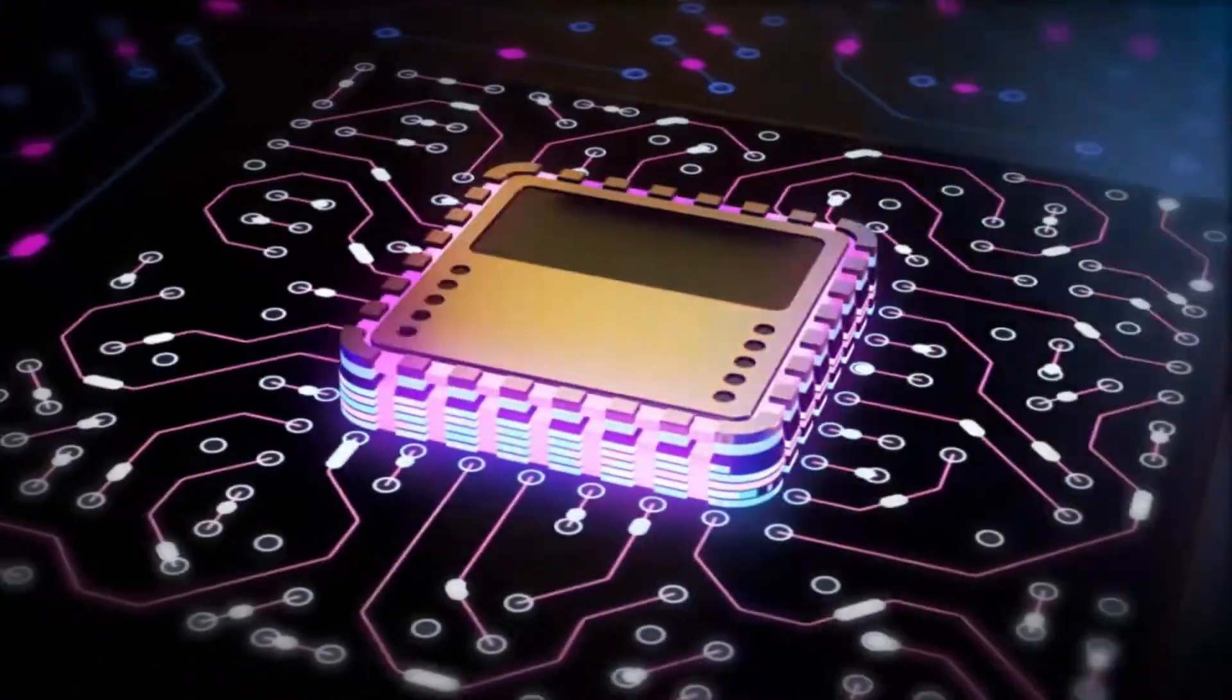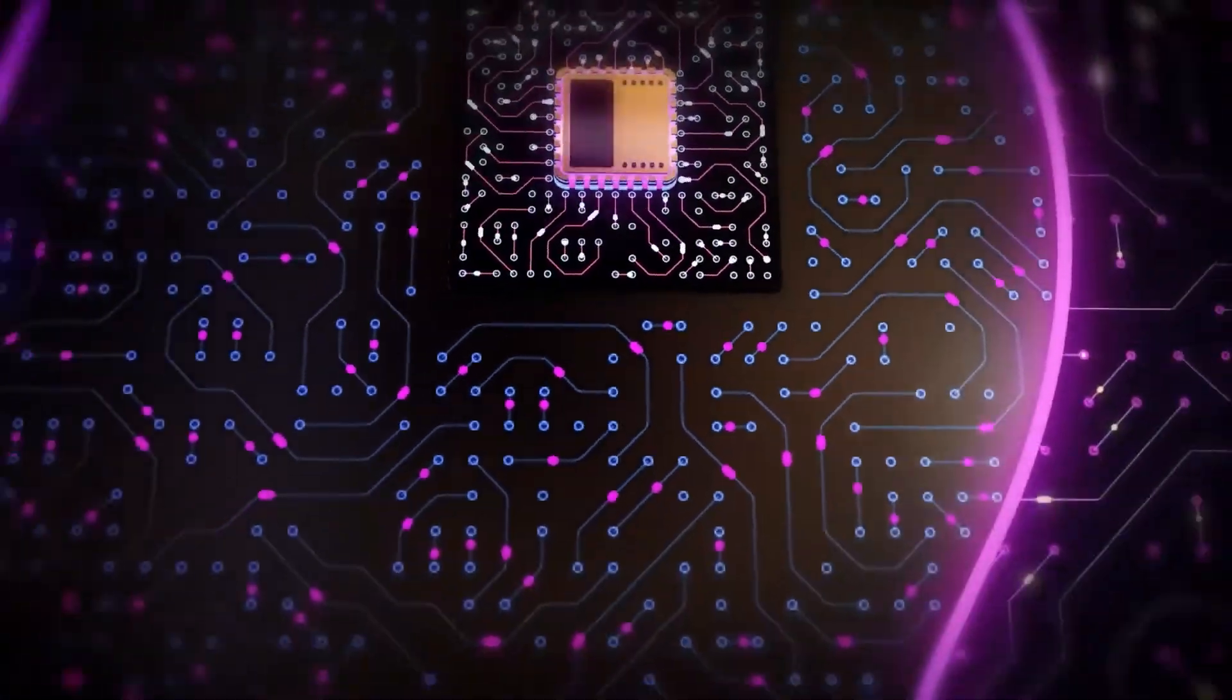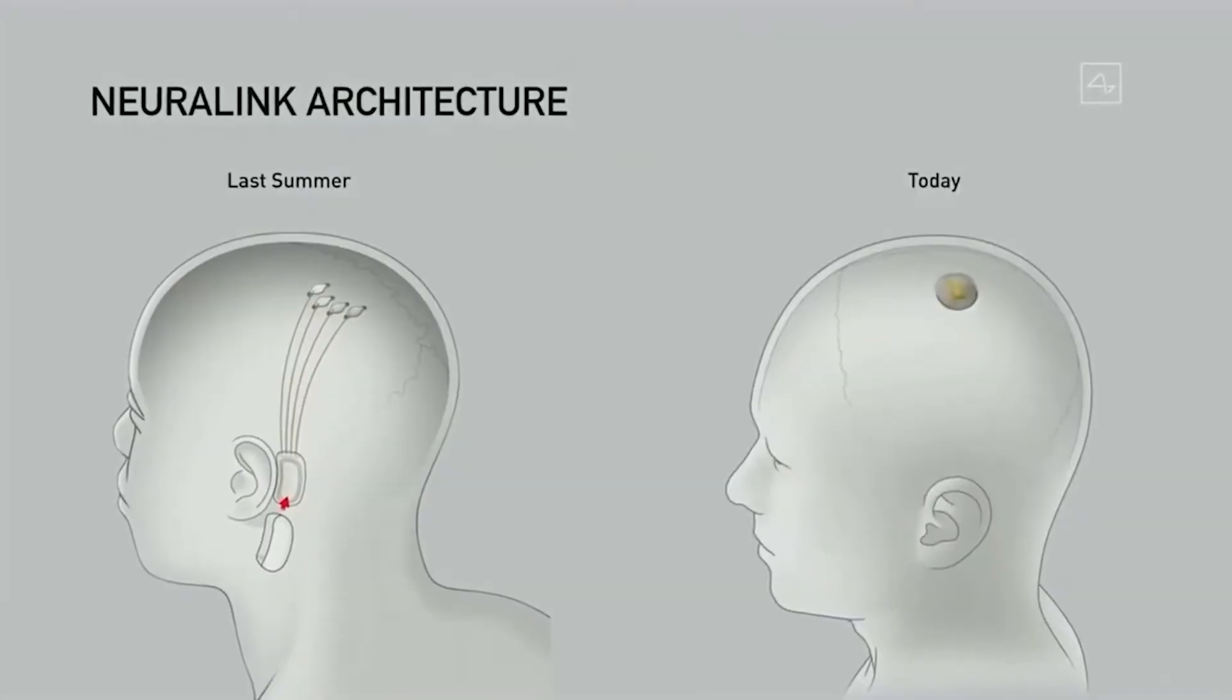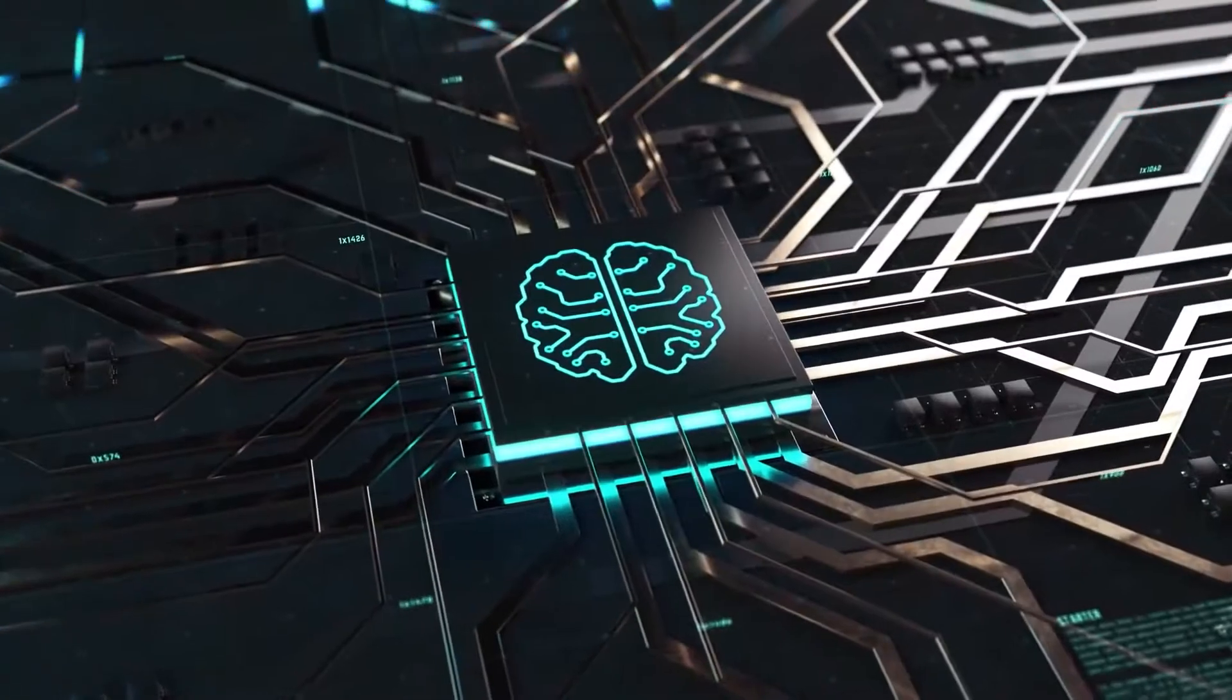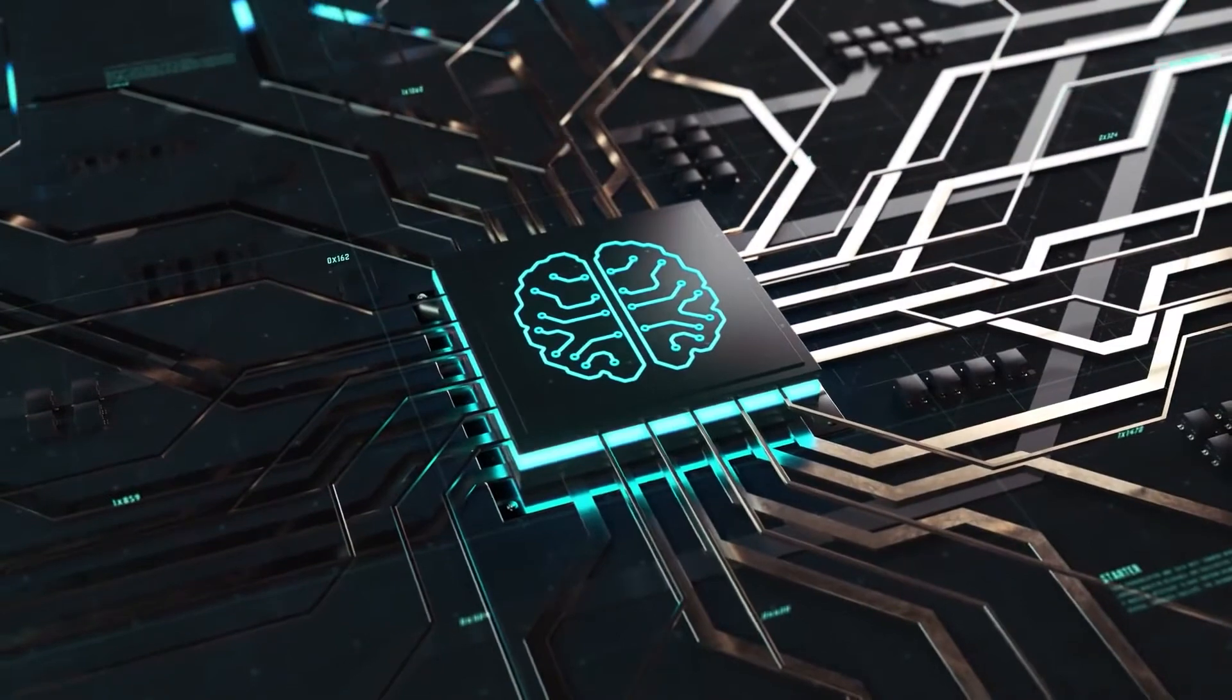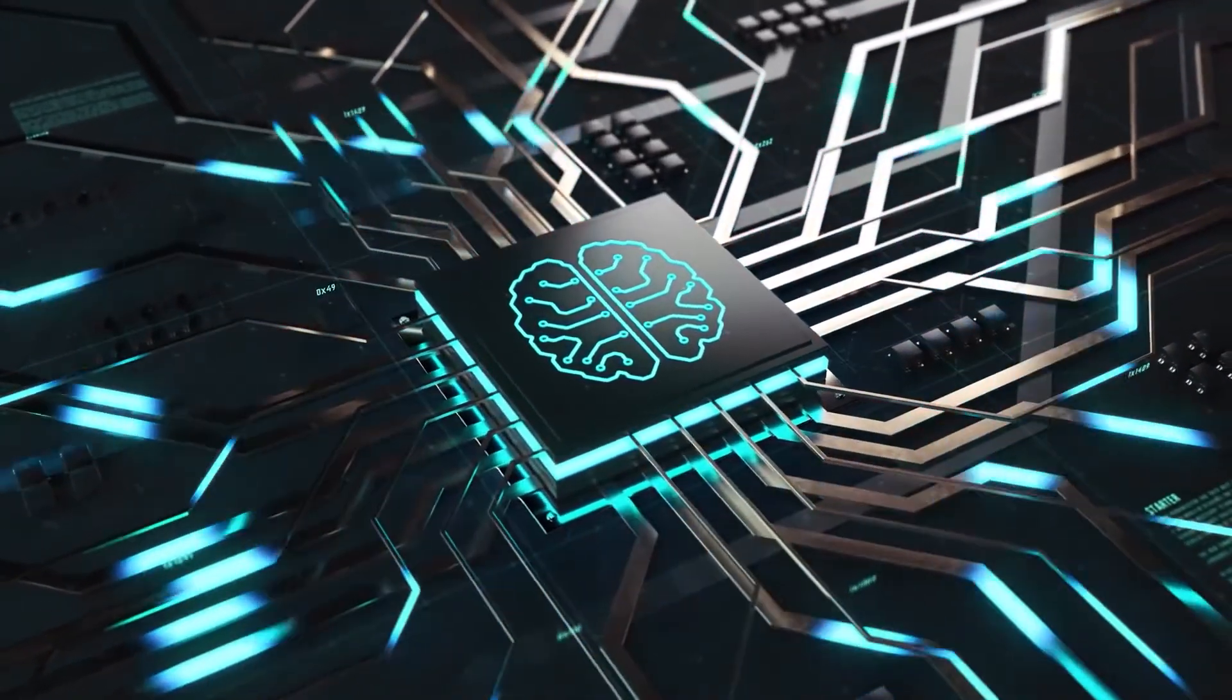On the other hand, the Neuralink chip uses more than 1,000 electrodes to catch the signals. They are placed inside of the blood vessels and work on the targeted area of the brain. It has been claimed that Neuralink catches three times more signals than other brain-computer interface devices.